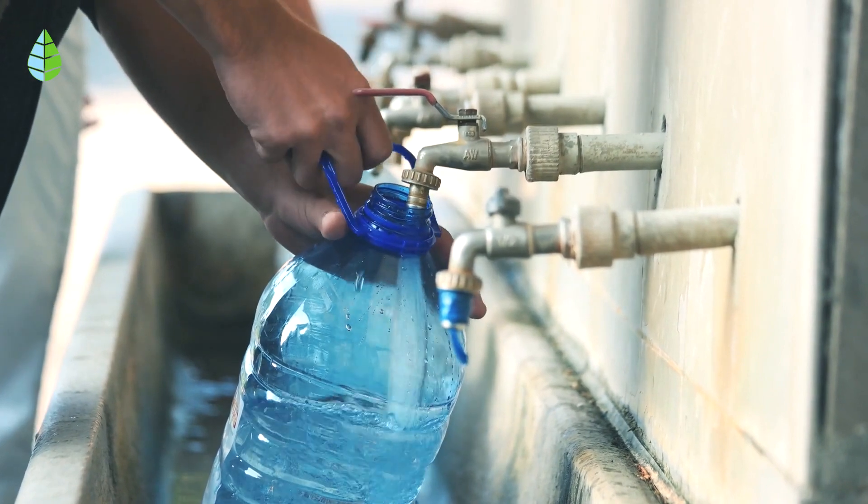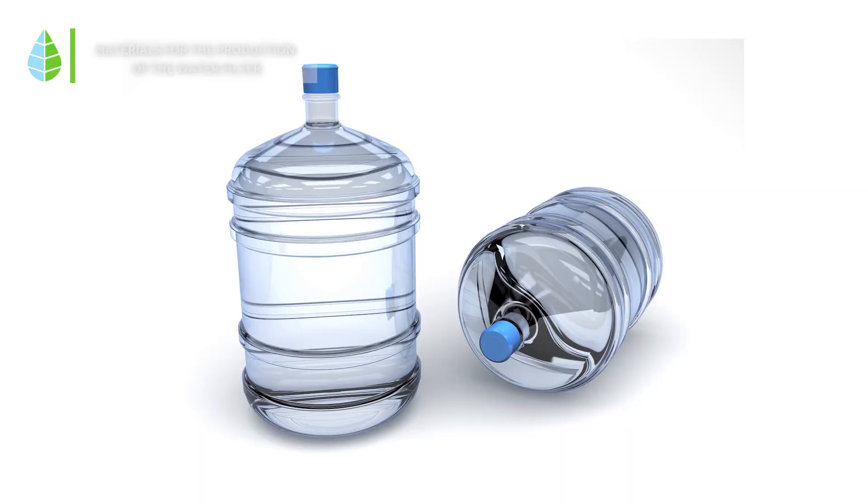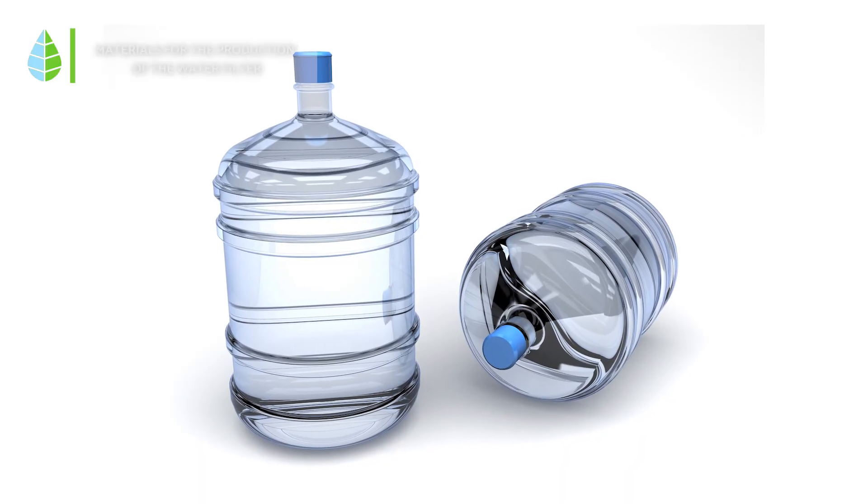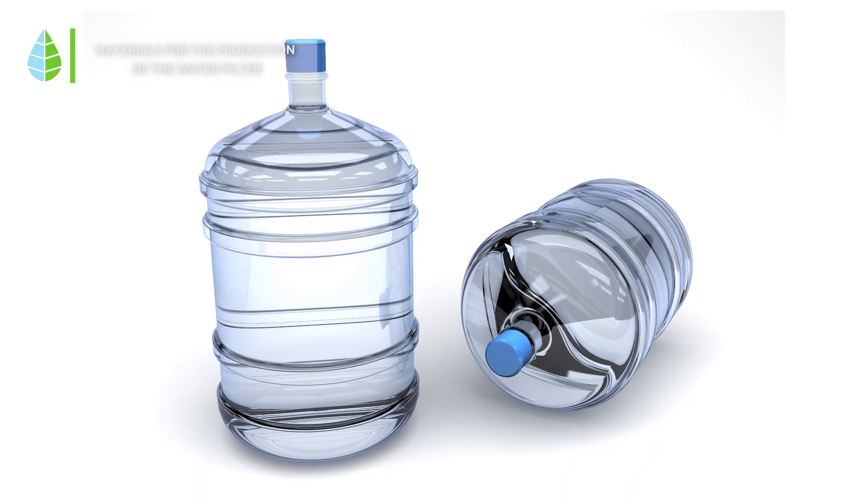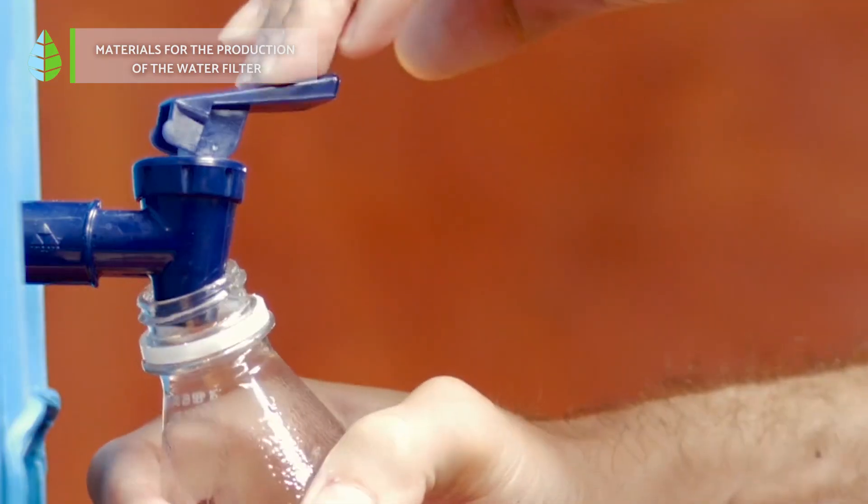Materials for the production of the water filter. All you need is the following: a large plastic container about one meter high. We recommend that you get a barrel that already has a tap or buy a very simple container to put it in place.